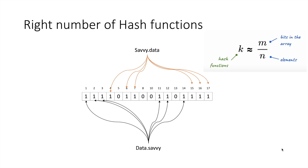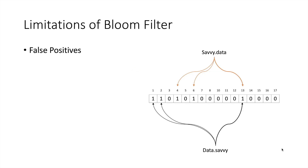Here is a formula to find out how many hash functions you should use. K is the number of hash functions and it is approximately equal to the number of bits in the array divided by the number of elements you want to store. So if you want to store 1 million elements and you have an array of size 4 million, then you can use 4 hash functions to build your bloom filter.